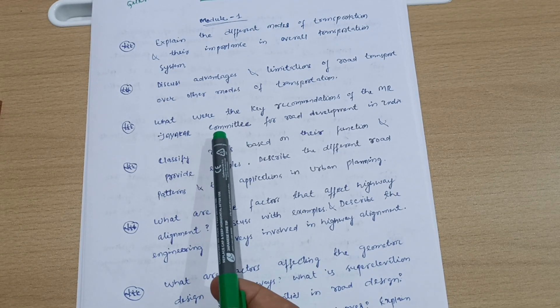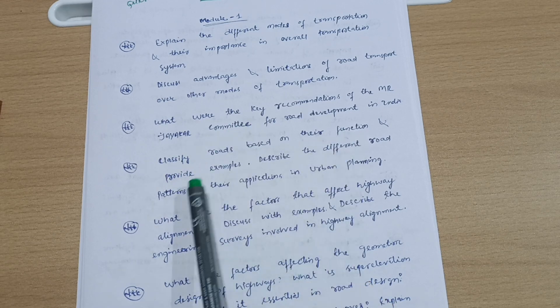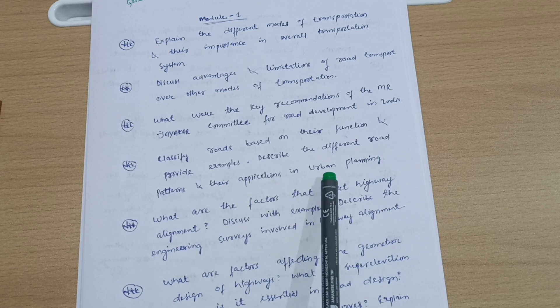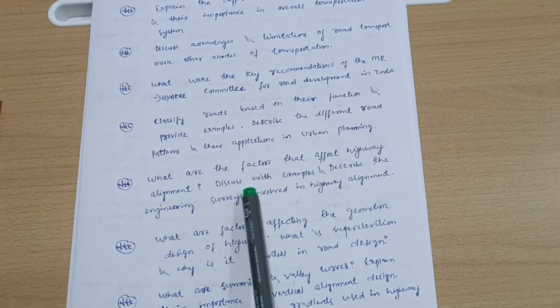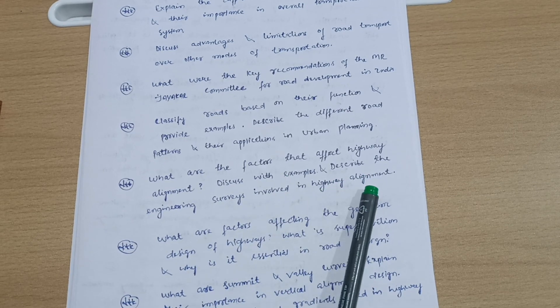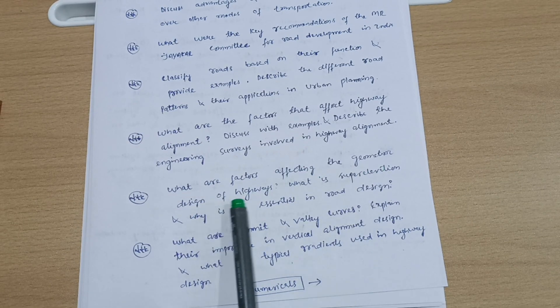Classify roads based on their function and provide examples. Describe the different road patterns and their applications in urban planning. What are the factors that affect highway alignment? Discuss with examples and describe the engineering surveys involved in highway alignment.